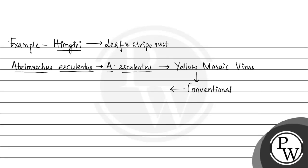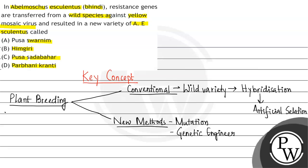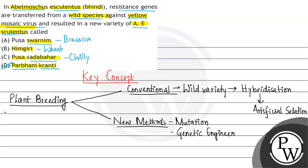After conventional breeding, the new plant created is commonly called Parbhani Kranti — this is the new improved variety of bhindi, and it is resistant to yellow mosaic virus. According to our question, the new Abelmoscus esculentus variety with resistant genes transferred from a wild species against yellow mosaic virus is Option D: Parbhani Kranti. The other options: Pousaswarnim is an improved variety of Brassica, Himgiri is of wheat, and Pousasadabaha is a variety of chilli.